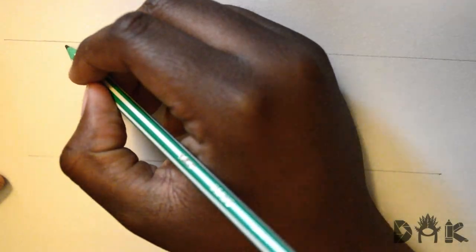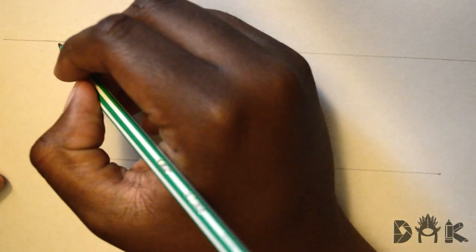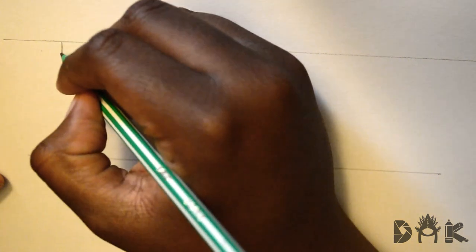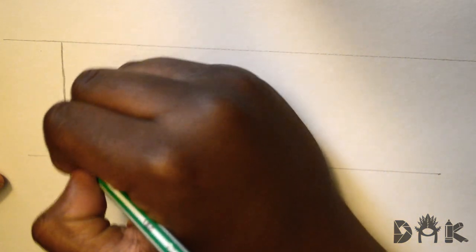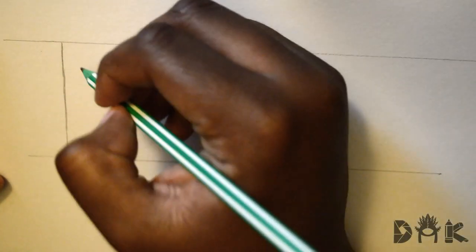Hey everybody, today we are gonna be learning how to draw the word drip with a dripping effect. I already have my two top and bottom lines drawn out and what we're gonna do first is create a layer.